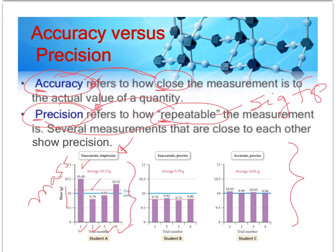The second time they get 9.29 grams — quite a bit of scatter from one trial to the next measuring, presumably, the same item. So we would say this is not very precise because it's not repeatable. And if the value it's supposed to be is represented by the blue line, these values are also not very accurate because they're not close to that blue line. This chart represents inaccurate and imprecise measurements.